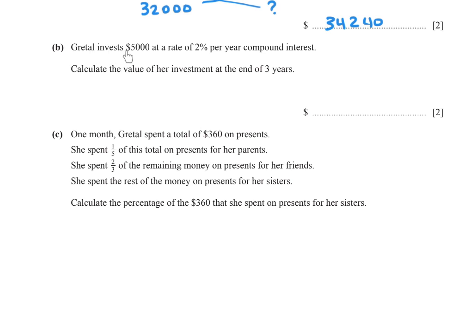Part (iii): The greater invests $5,000 at a rate of 2% per year compound interest. Calculate the value of her investment at the end of three years. The rule for compound interest: principal, which is 5,000, times (1 plus the rate 2 over 100) to the power 3, equals $5,306.04.